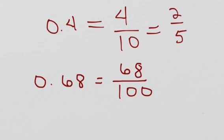We can also simplify 68 over 100, and we can divide both of those numbers by 4. 68 divided by 4 is 17. 100 divided by 4 is 25, giving us 17 over 25.